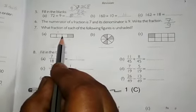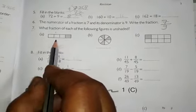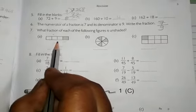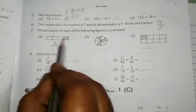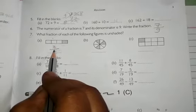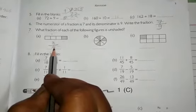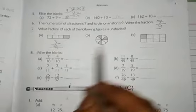So we write it in fraction. Unshaded box are written in fraction. Three box are unshaded, so we write three and total box is four. So we write like this, three by four. You do B and C.